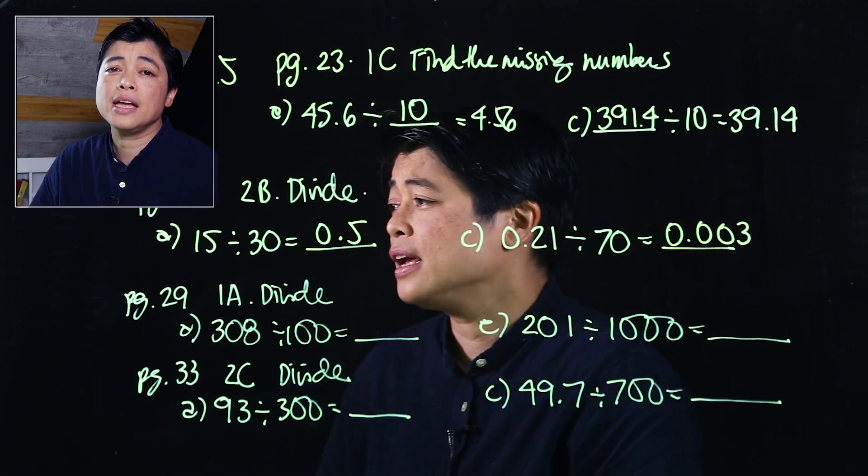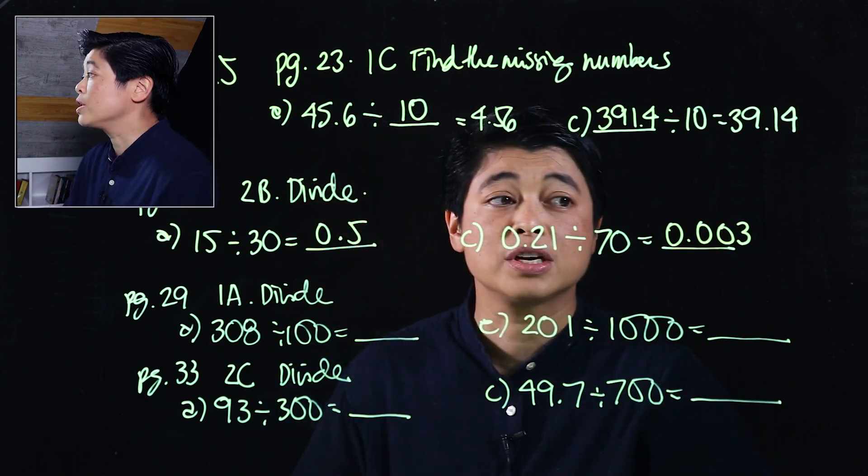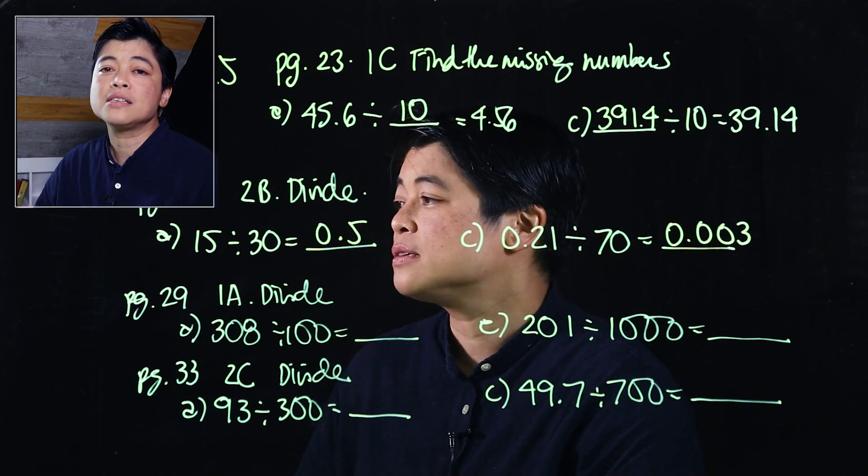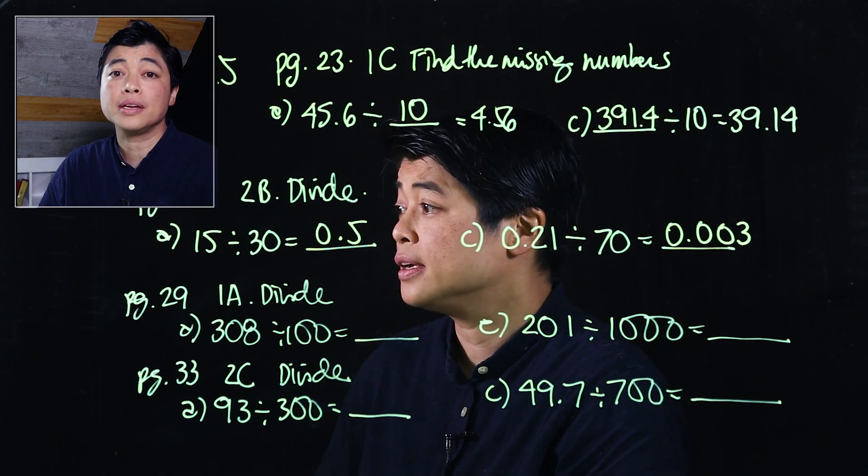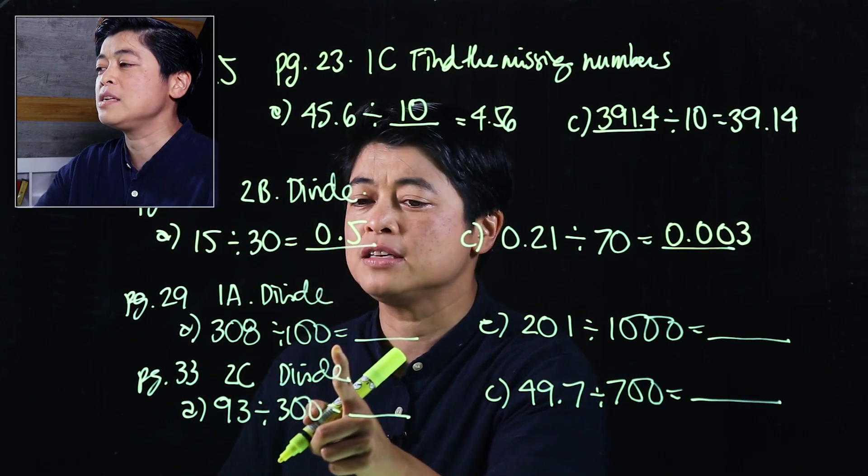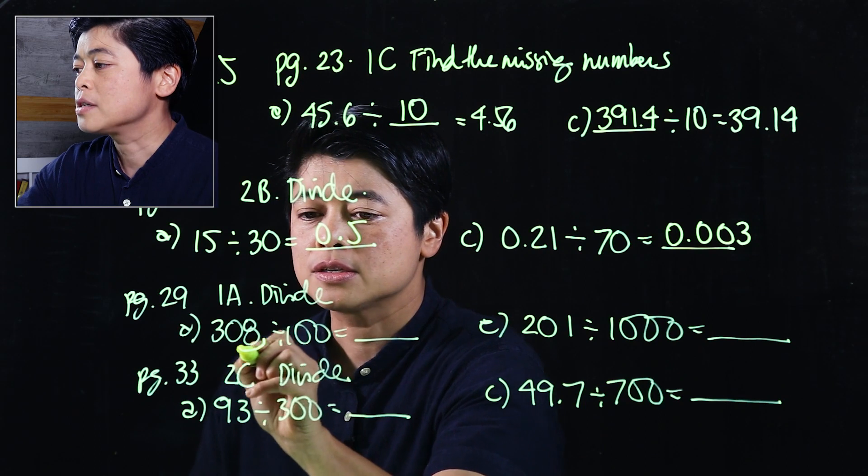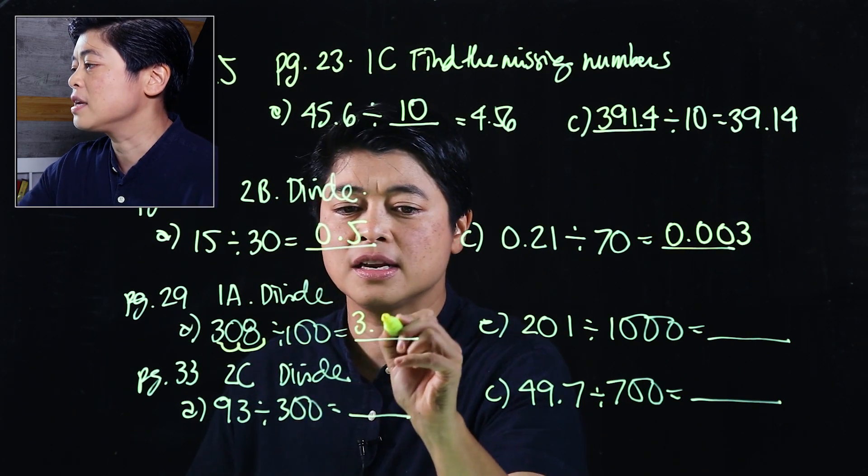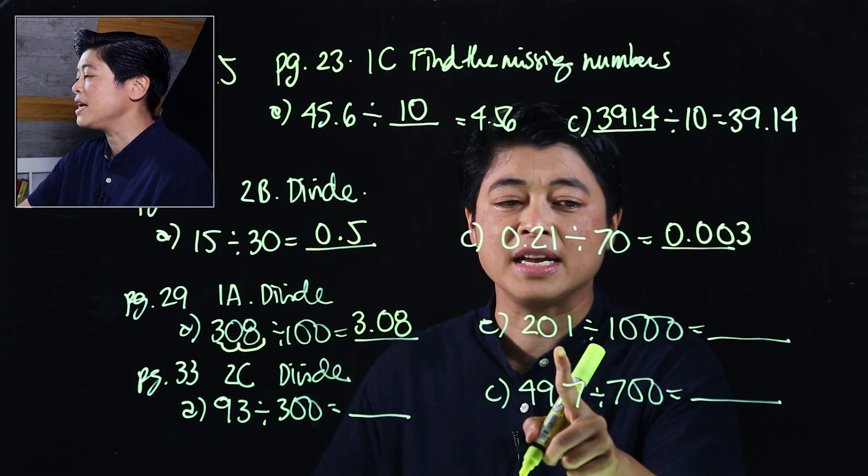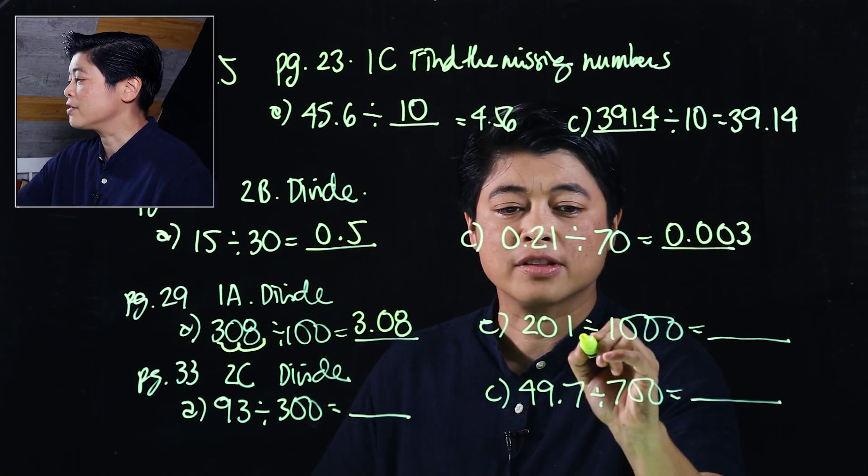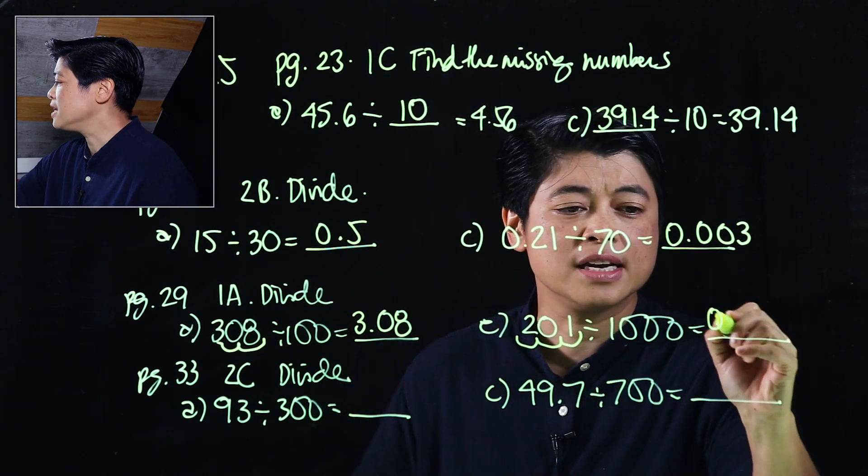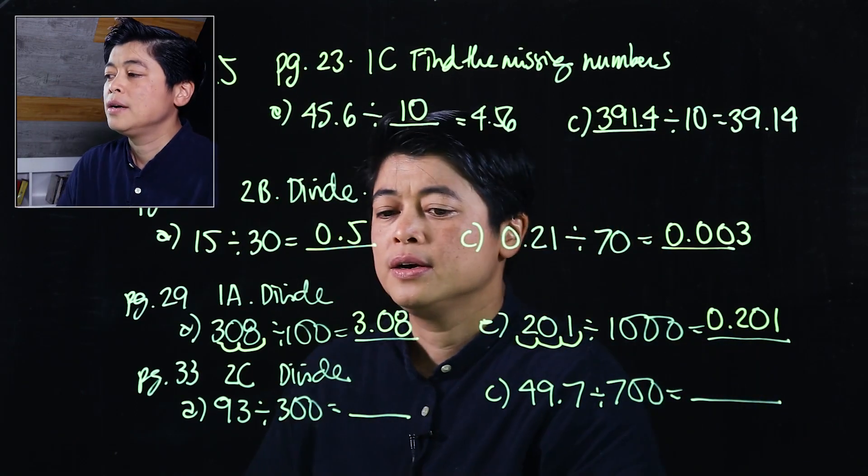So again, if it can't be done mentally, then we have no choice but to do the division. But we have to train ourselves how to divide these mentally because they're not very hard. Okay, so when we divide 308 by 100, this just means move the decimal two places to the left. So 1, 2 gives us 3.08. While here, it asks us to move three places to the left because it's divided by 1,000. 1, 2, 3 gives us 0.201.